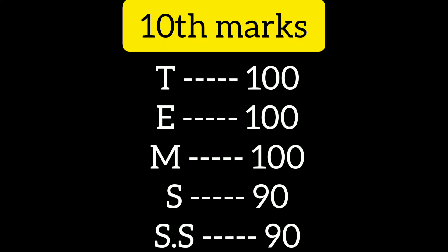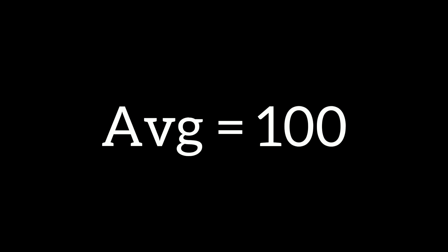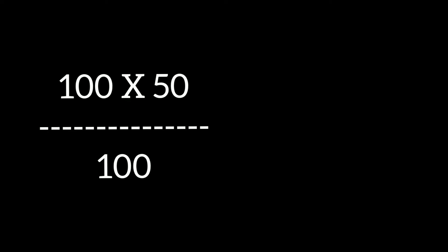If you are confused, let's go through an example. Suppose one student's 10th marks are: Tamil 100, English 100, Maths 100, Science 90, Social Science 90. The best 3 highest marks are 100, 100, 100. Add them to get 300, divide by 3 for the average, then multiply by 50%. So 300 divided by 3 is 100, and 100 into 50 by 100 equals 50. So the 10th marks component is 50.